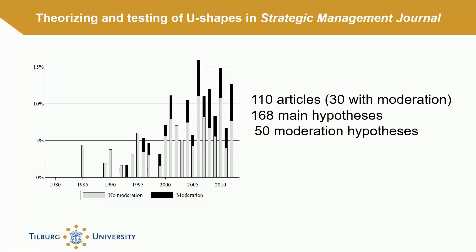Furthermore, researchers are increasingly exploring more complicated versions of U-shaped relationships by introducing moderating variables to these relationships. Our review of 110 articles published in the Strategic Management Journal identifies a variety of issues that warrant attention in future research.